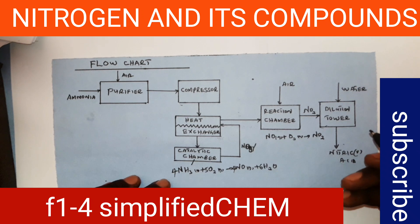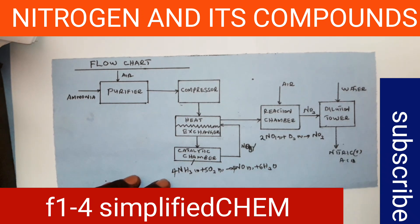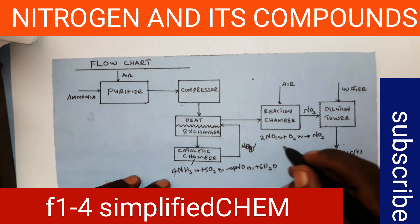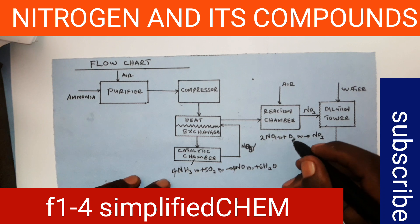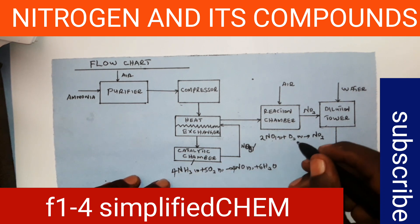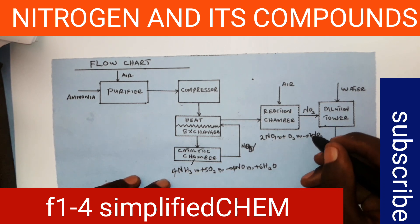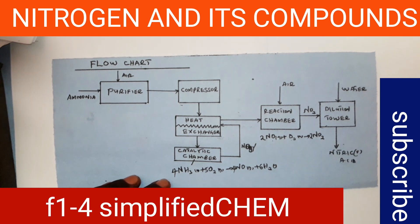To balance the equation, I place 2 in front of nitrogen monoxide. That makes all the oxygen atoms total 4, so I place 2 in front of nitrogen dioxide to balance the equation: 2NO + O₂ → 2NO₂.